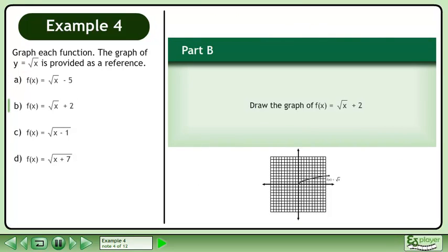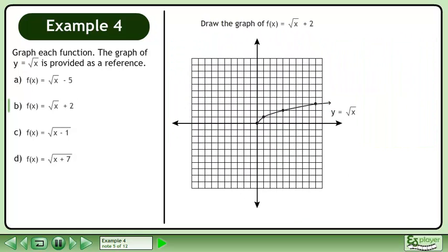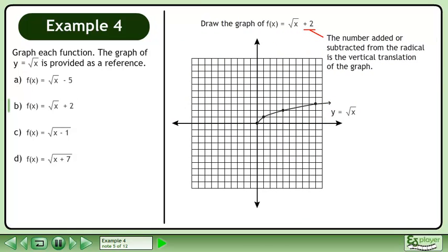In part b, draw the graph of f equals the square root of x plus 2. The number added or subtracted from the radical is the vertical translation of the graph. Move the original graph up 2 units to get the graph of f equals the square root of x plus 2.